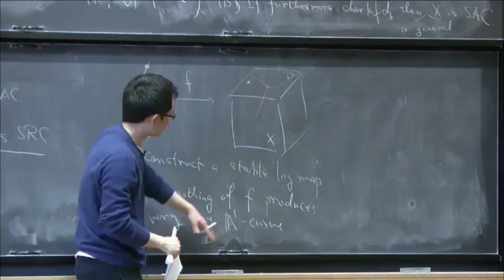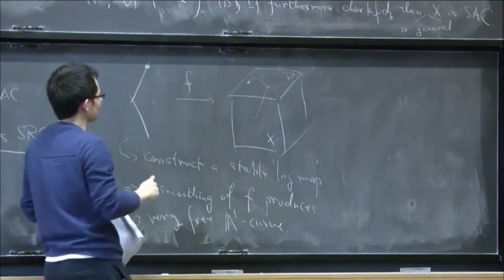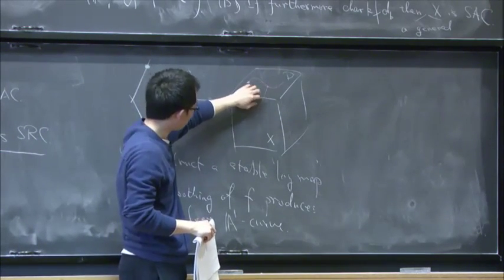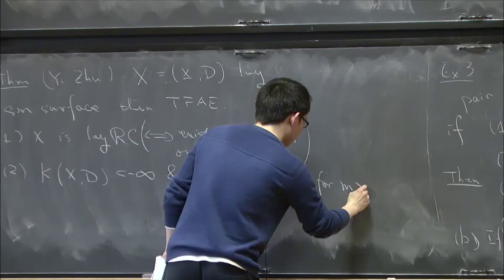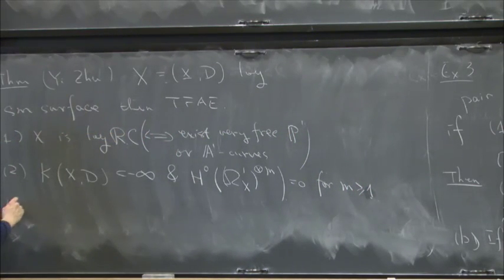And then we compare the tangent space at this point, and show that tangent space, the positive direction of the tangent coming from these two curves, spans the whole dimension. And then its smoothing of F produce a very free A1. So the reason that we, a very free A1 is, we have only one marked point that remembers the tangency. And once it smooths out, the whole component deforms out of the N equals one.